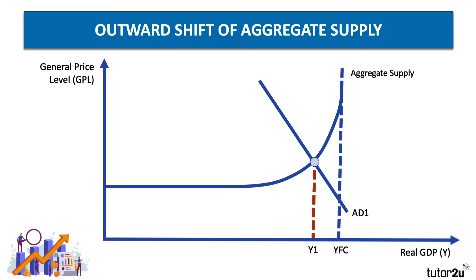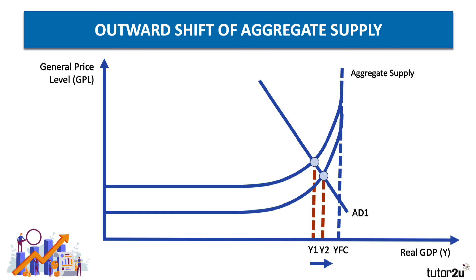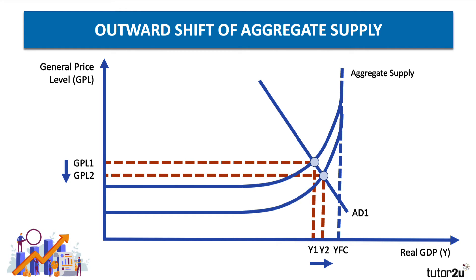Here's our initial equilibrium, Y1. A fall in costs shifts the aggregate supply curve outwards and downwards, leading to a fall in the equilibrium price level but an increase in output from Y1 to Y2, and a reduction in the price level from GPL1 to GPL2. That would typically cause some disinflationary pressure in the economy — the rate of inflation we'd expect to come down.